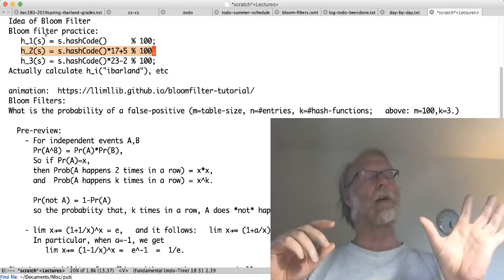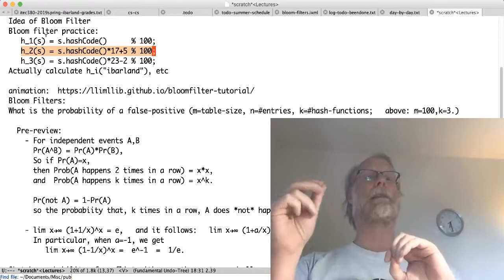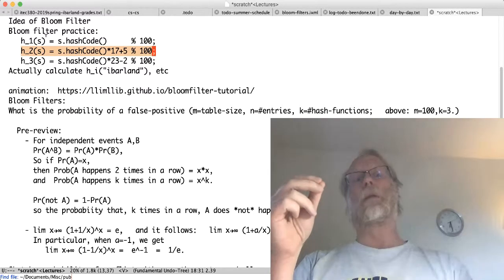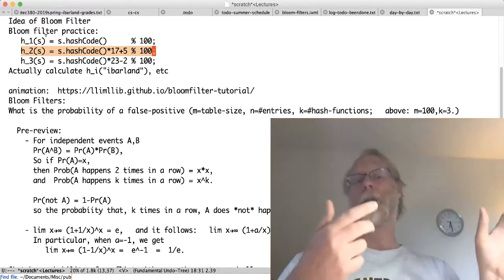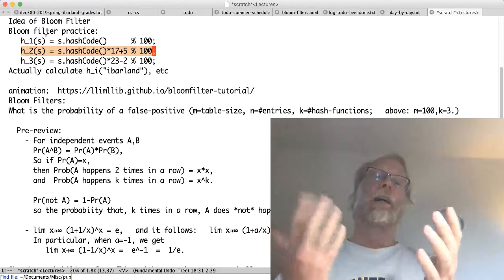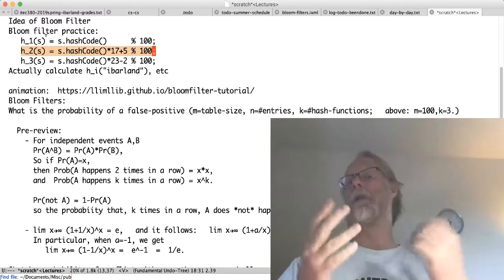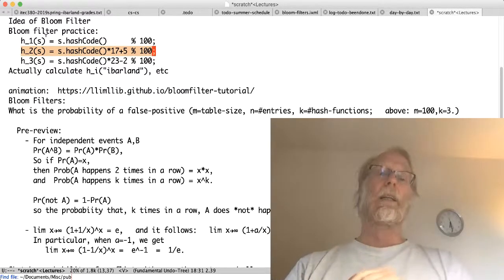What about h2 of Bartok? Maybe that bit had been set by h1 of whoop-de-doo. And what about h3 of Bartok, is that bit set? Maybe it had been set by something else that had been entered previously. And I'll come back and say yeah, Bartok was in the set, even though Bartok's not there.